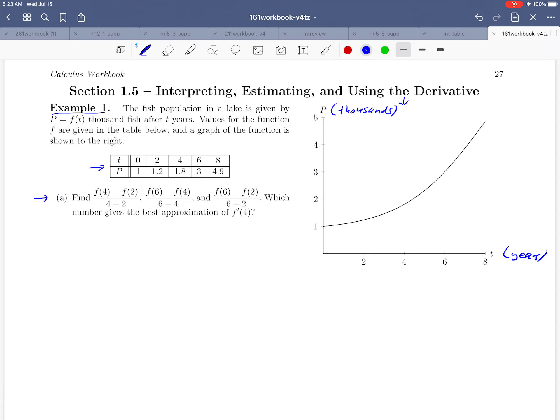Looking down at part a here now, the first calculation they'd like us to do is f of 4 minus f of 2 over 4 minus 2. You might recognize that as an average rate of change that we're being asked to calculate. f of 4 and f of 2 are numbers that we can get by looking at our table. In particular, f of 4 is 1.8 and f of 2 is 1.2. So we'll take those and subtract them. And in the bottom we've got 4 minus 2, which is 2. So 1.8 minus 1.2 over 2, and if we do that calculation, we get 0.3.